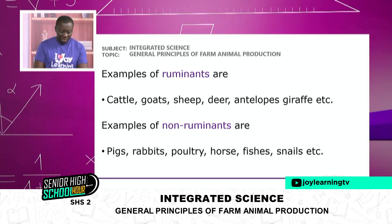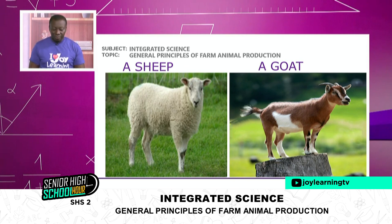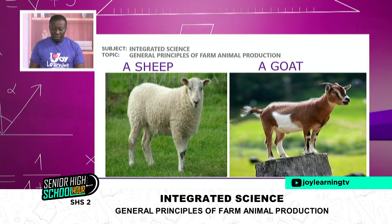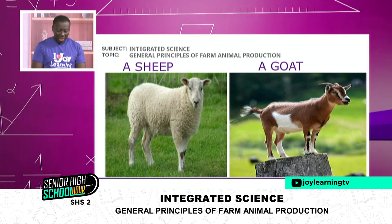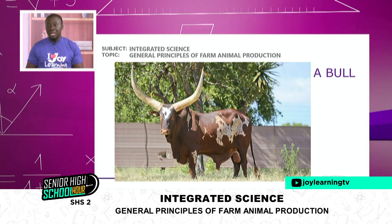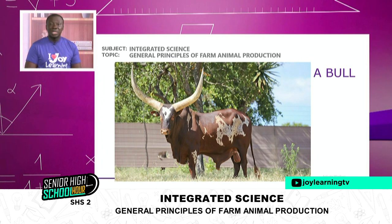Displayed on your screen are some pictures of these ruminants so you can easily keep them in your head. We have a sheep, a goat, and moving to our next slide, a bull — a male cattle. We have different types and as we move on we shall mention some of their names.